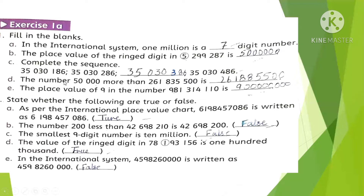The number 50,000 more than this number is obtained by adding 50,000 to this amount, giving us this result. The place value of 9 in the number is 900 million.